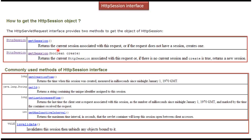The first method is getSession(). What this method will do is return the current session associated with the request. If the request does not have a session, it will create a new one and return it. The second method is getSession(boolean). If you pass true, it will return the current session associated with the request, or create a new one if none exists. If you pass false, it will return the current session associated with the request, but if no session is associated, it will return null — it won't create a new session object.